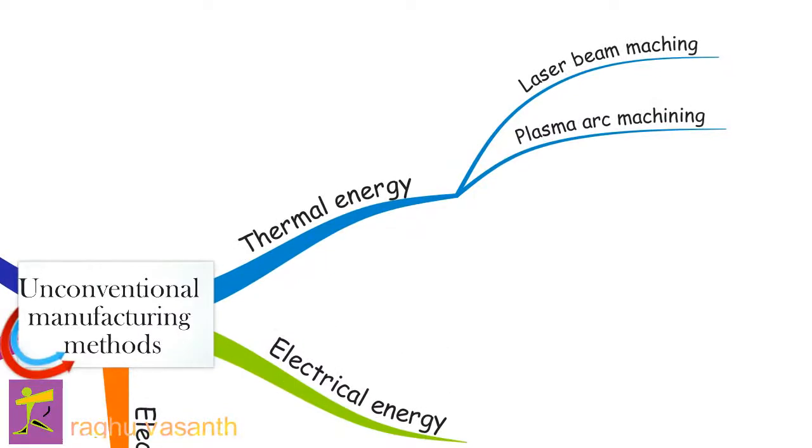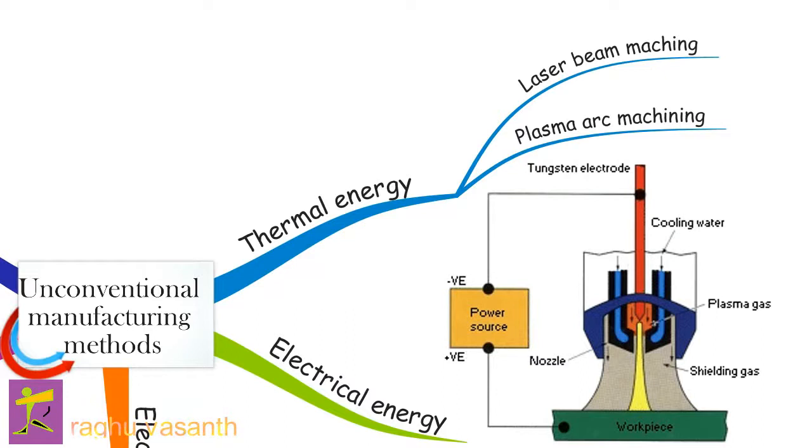Plasma arc machining, PAM, is a method of cutting metal with a plasma arc or tungsten inert gas arc. The torch produces a high-velocity jet of high-temperature ionized gas that cuts by melting and displacing material from the workpiece.